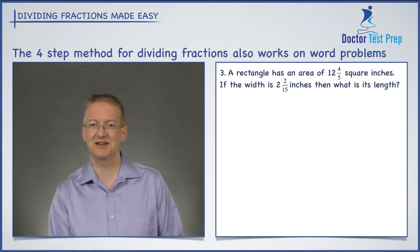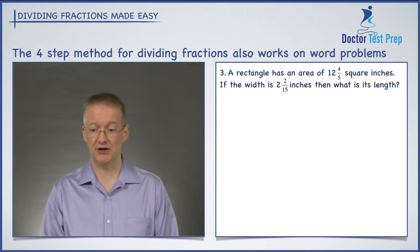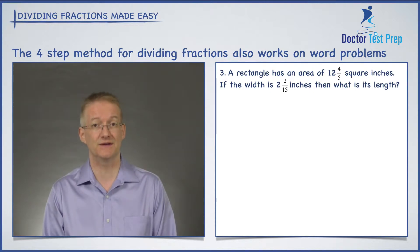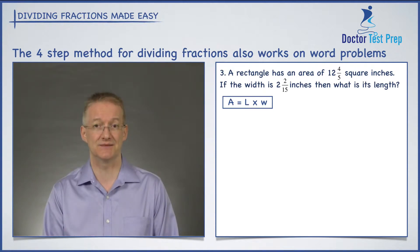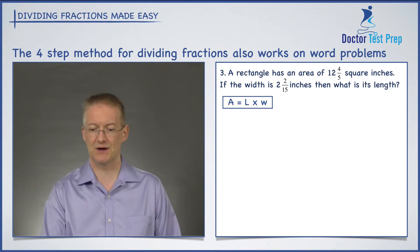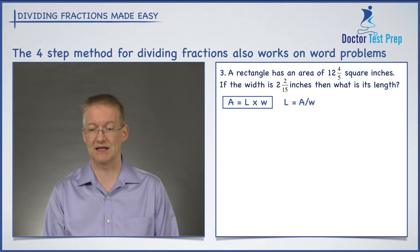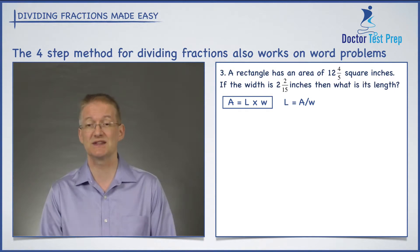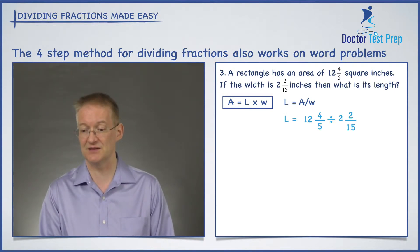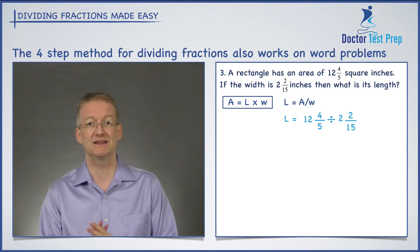Now let's have a look at this nasty-looking word problem that involves division. We have a rectangle whose area is 12 and 4 fifths square inches. If the width of the rectangle is 2 and 2 fifteenths, what is its length? We know that area equals length times width. We want to find the length, so I'm going to divide both sides of that equation by W, and that tells me that L equals A divided by W — the area divided by the width.